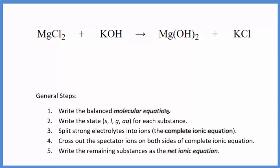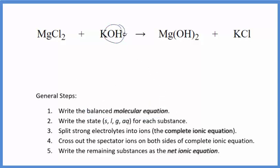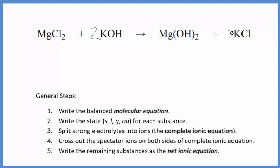The first thing we need to do is balance the molecular equation. I can see that I have this OH here — the hydroxide group — and then I have two of them over here. I'm going to put a 2 in front of the KOH. That balances the hydroxides and potassium.